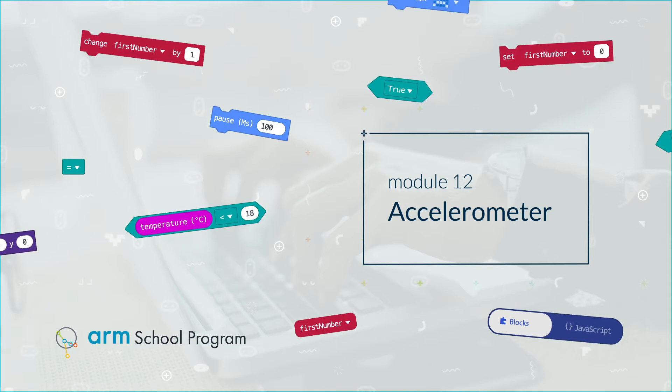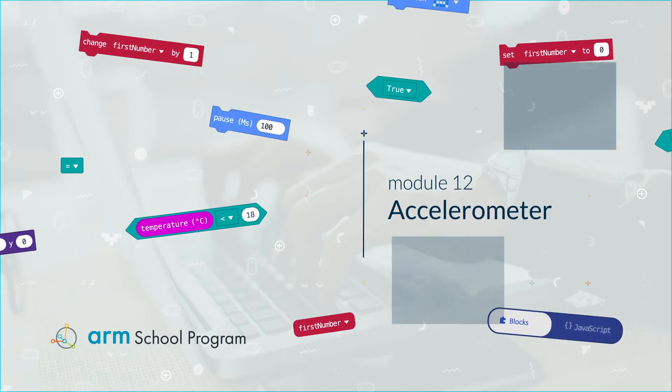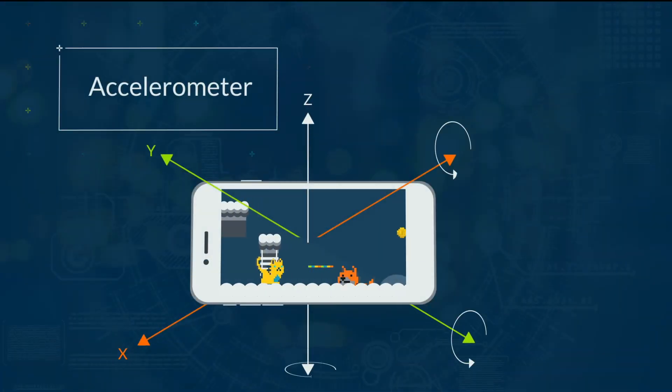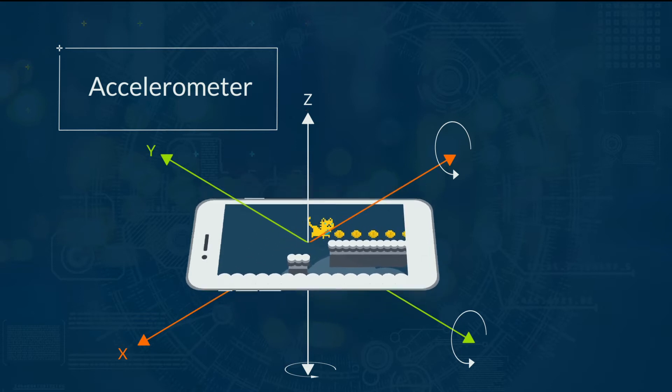Module 12: Accelerometer. Have you played a game on a phone or tablet where you have to tilt the device? How does the device know you're tilting it? Because of a sensor called an accelerometer.